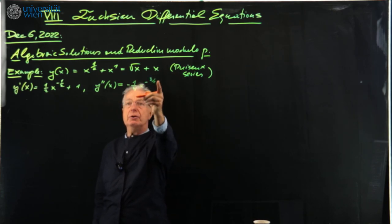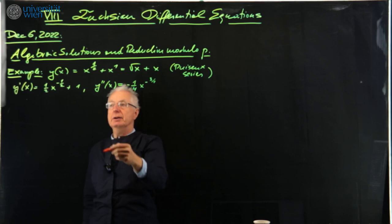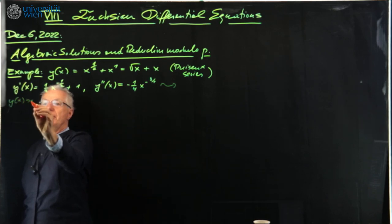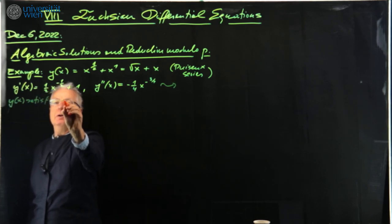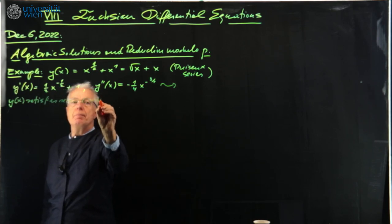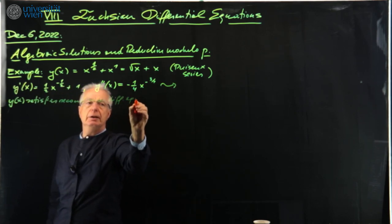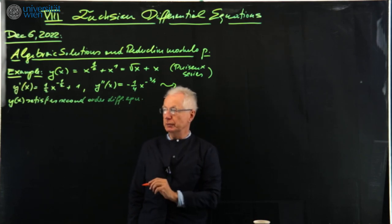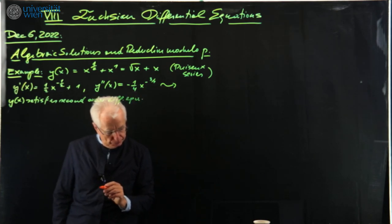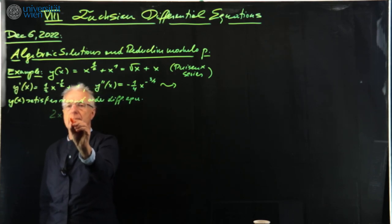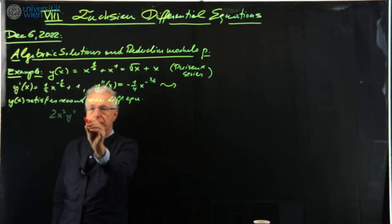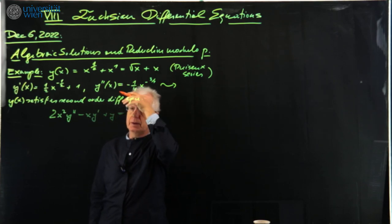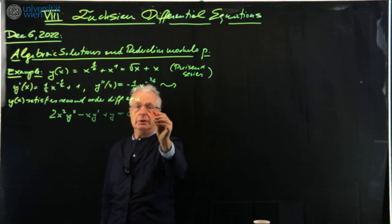We see already that we will get a differential equation of order two. y(x) satisfies a second-order differential equation. In this context we always only allow differential equations with polynomial coefficients. It looks as follows: 2x² y'' - x y' + y = 0. This is an Euler equation, as you now already know.